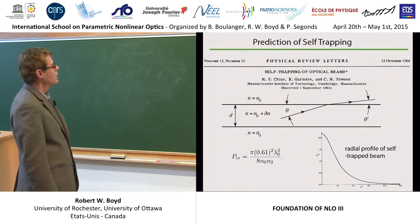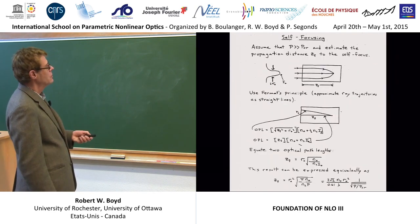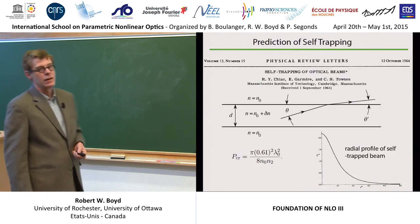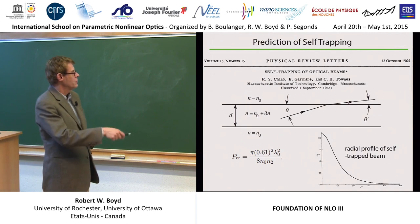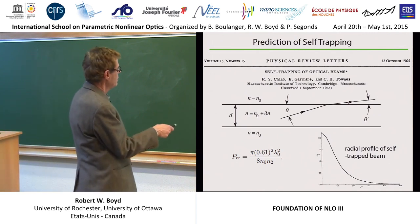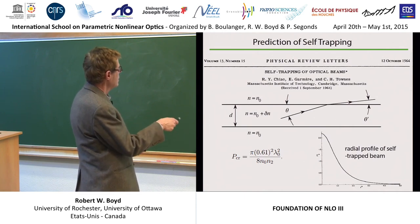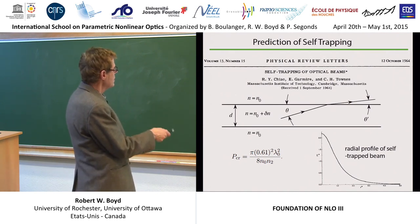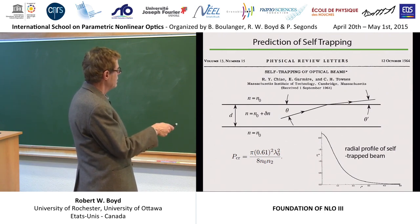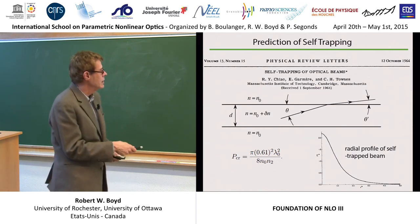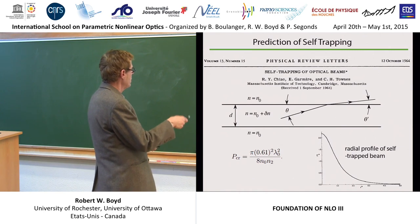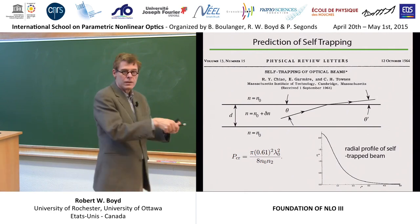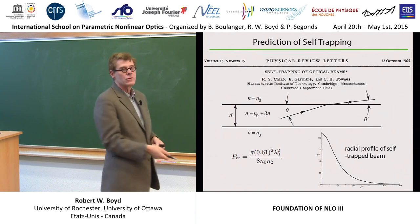Now, what about self-trapping? Just to remind you, self-trapping is this process here. This was the model that Professor Townes came up with himself. Here's how the argument goes: let's say here is the filament. Outside the filament, the refractive index is its nominal value. Inside the filament, the refractive index has a nonlinear contribution, which we can take to be N2I. In a filament of finite diameter, there will be a diffractive spreading of the beam, a characteristic angular spread. We require that every ray in this bundle undergoes total internal reflection.